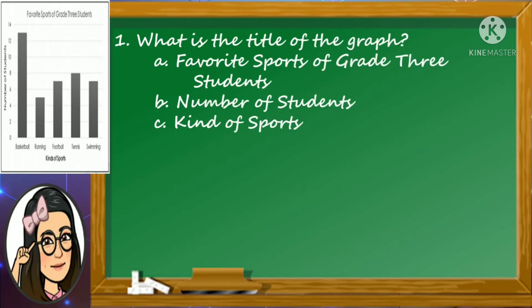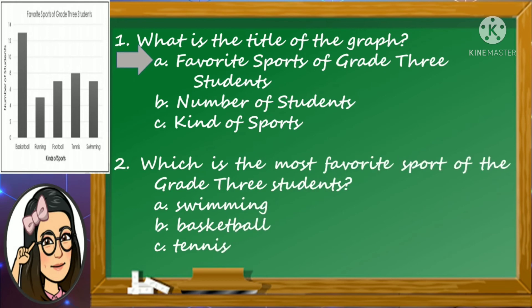First question: What is the title of the graph? A. Favorite sports of grade 3 students. B. Number of students. Or letter C. Kind of sports. Excellent! The title of the graph is Favorite Sports of Grade 3 Students. Number two: which is the most favorite sport of the grade 3 students? Is it A. Swimming, B. Basketball, or letter C. Tennis? Good job! According to the table, the most favorite sport of grade 3 students is basketball.